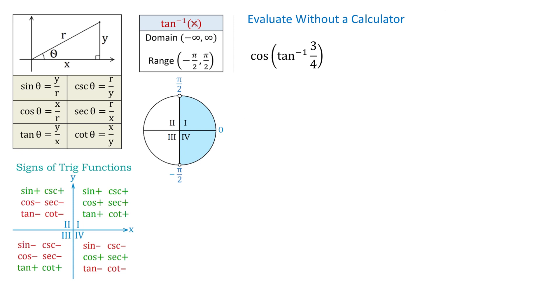To find the value of this expression, first we have to work on the expression inside the parenthesis, which is inverse tangent of 3 over 4. Because 3 over 4 is not a value of the tangent function at any special angles, we will not use the unit circle. Instead, we will do this problem by sketching a right triangle.